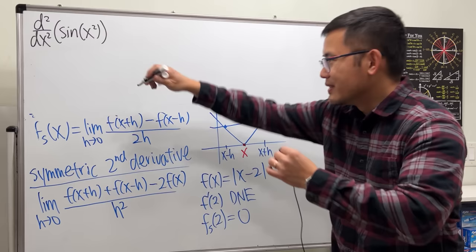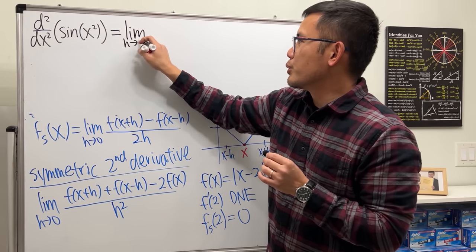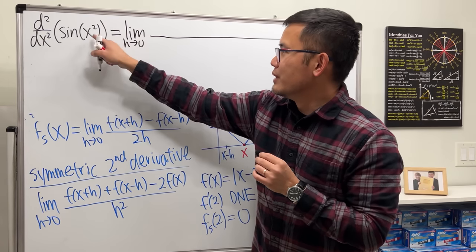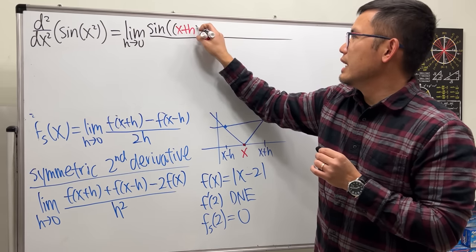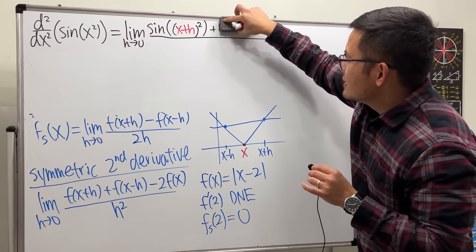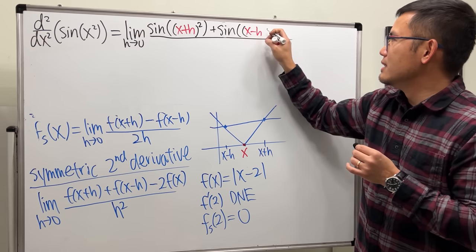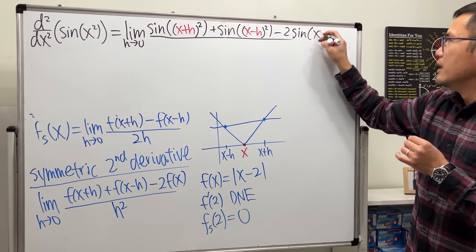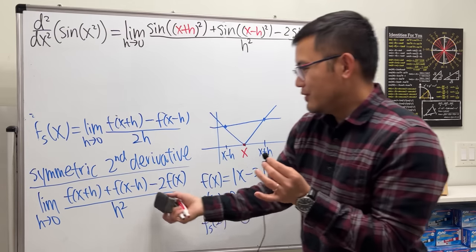Let's set this up. This equals the limit as h approaches zero. We put x plus h into the function to get sine of (x plus h) squared, then plus sine of (x minus h) squared, then minus 2 times f of x which is sine of x squared, and all over h squared.